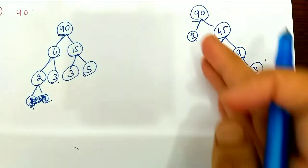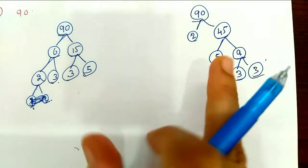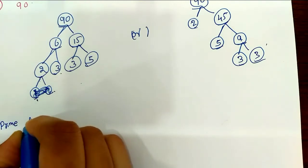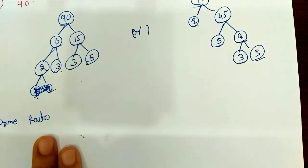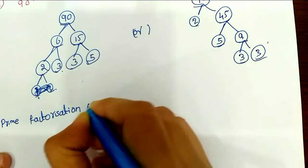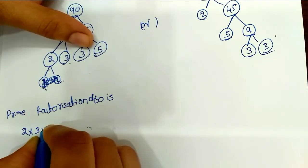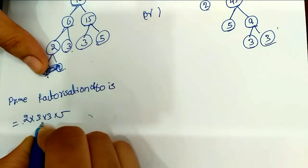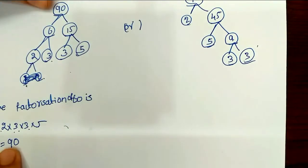First of all, we have to use the factorization method. We have to do prime factorization. The prime factorization of 90 is 2 into 3 into 3 into 5. Here, we have to confirm that all factors are prime numbers. Then: 6 times 3 is 18, and 18 times 5 is 90. So it is 90. We have to confirm the product of the factors equals 90.